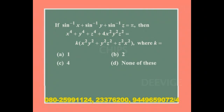If sin⁻¹x + sin⁻¹y + sin⁻¹z = π, then x⁴ + y⁴ + z⁴ + 4x²y²z² = k(x²y² + y²z² + z²x²). Find k. Option a: 1, option b: 2, option c: 4, option d: none of these.